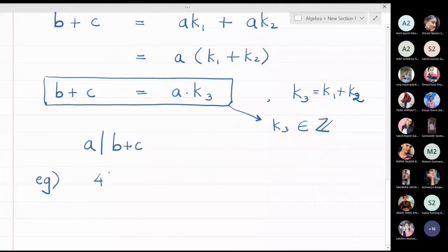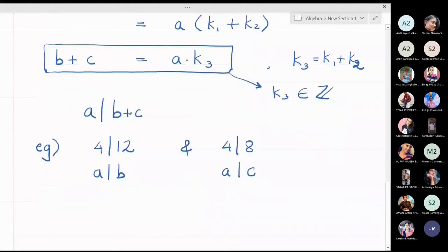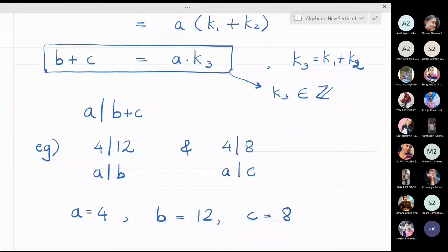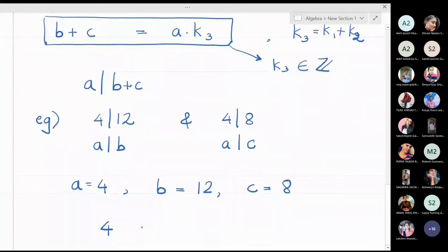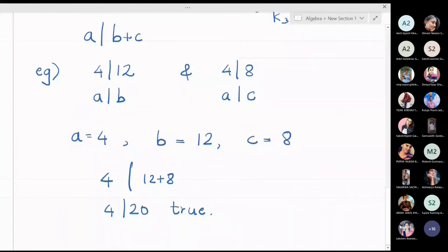A simple example: 4 divides 12 and 4 divides 8, where a equals 4, b equals 12, and c equals 8. The property tells us that 4 also divides 12 plus 8, i.e., 4 divides 20. We know 4 actually divides 20, so the property is verified.